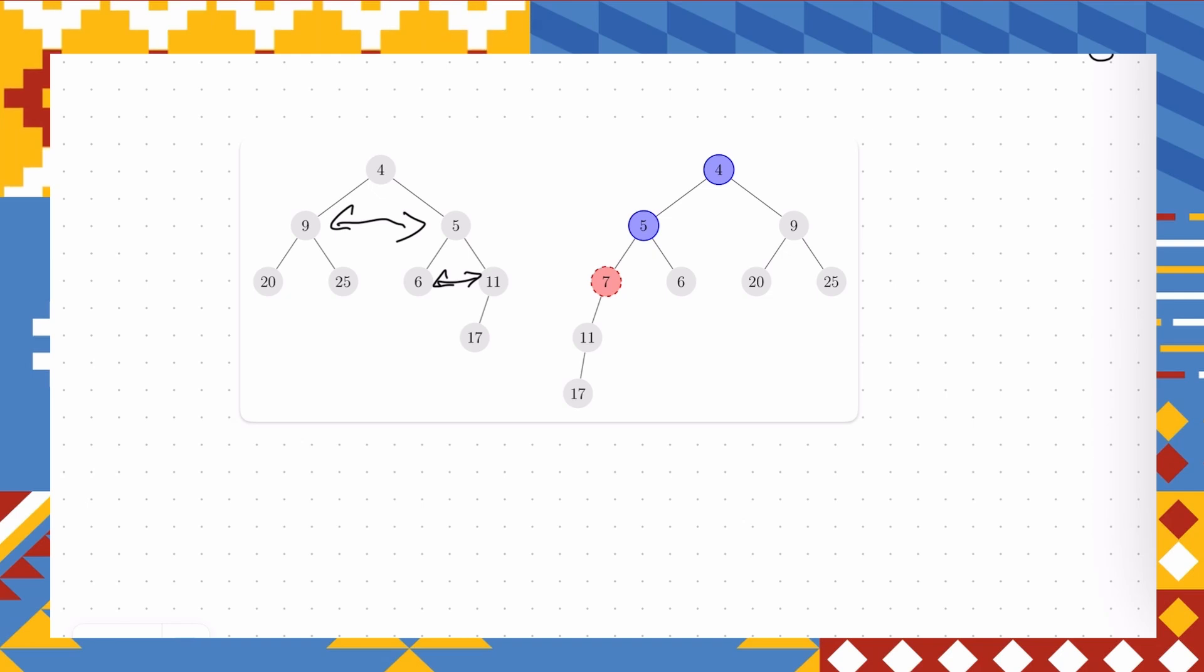So first of all, let's notice that everything that's happening in our left subtree and in our right subtree is kind of independent. So if we consider our order, our minimal value is inserted somewhere, and for everything else,